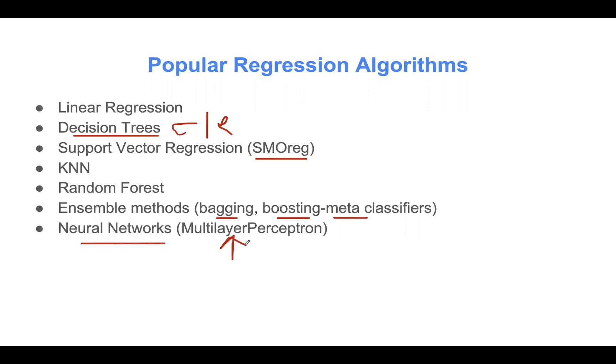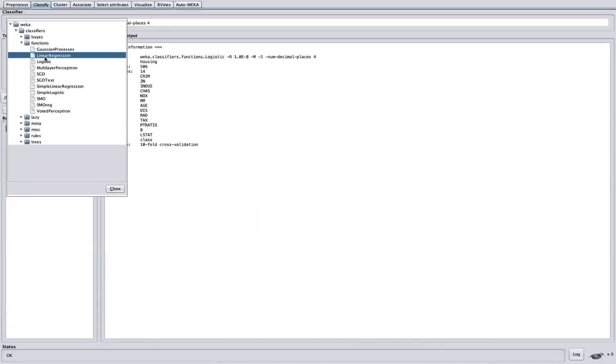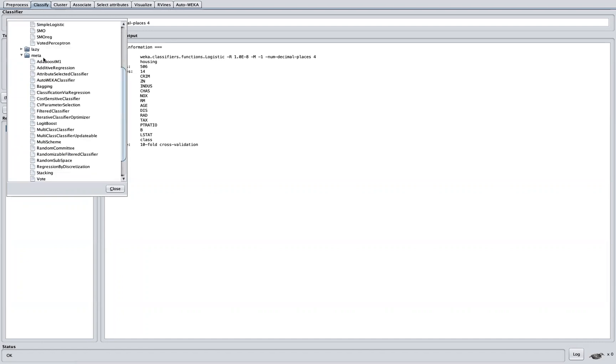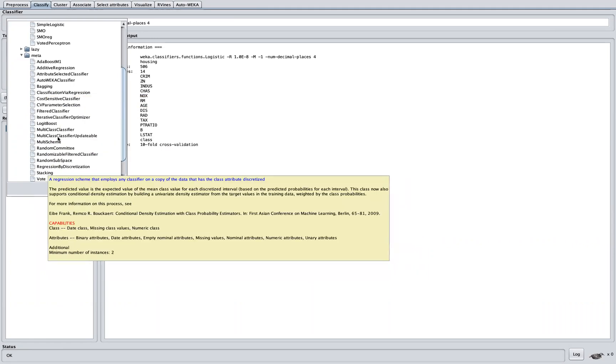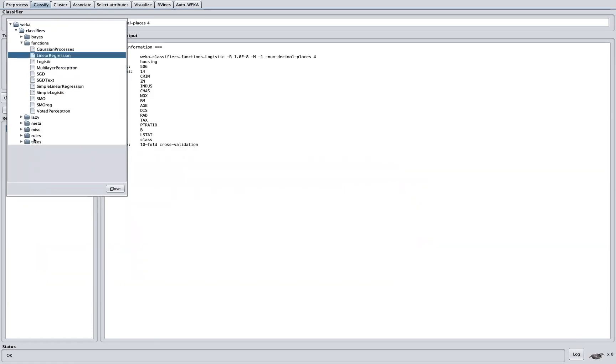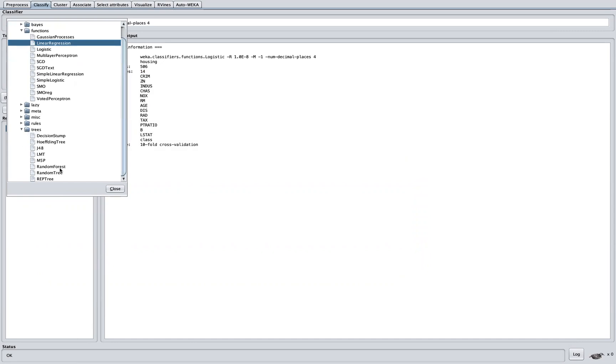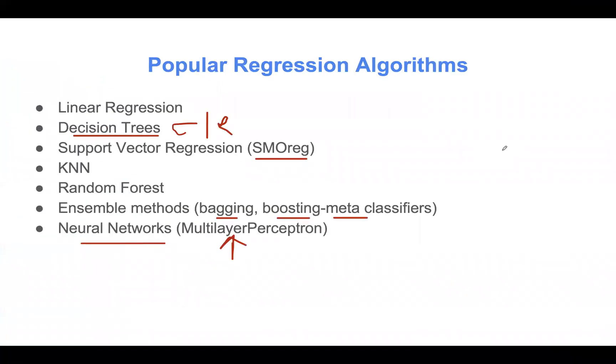In fact, if you go here in Weka, classify tab, click choose, can see here functions, we have linear regression. We have SMO reg, the support vector machine for regression. If you go to meta here, you can see this is where we have ensemble methods in Weka. We can choose bagging here. We can choose stacking. We can choose boosting and so on and so forth. Here we can see we also have, if you click on trees, we have random forest. Again, here we can see this is the neural network.